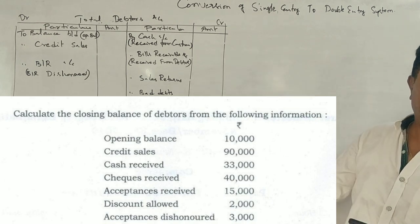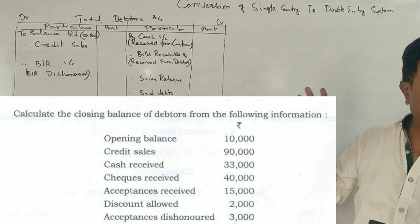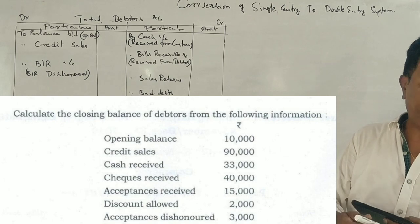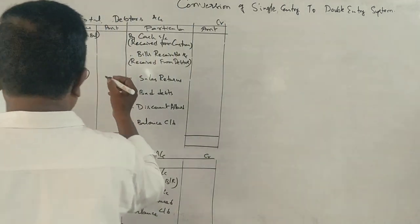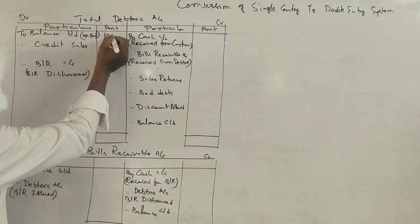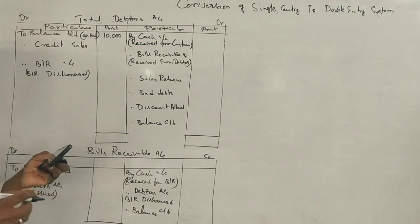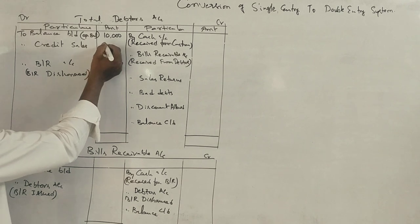Now, what is the case? The board is not here. Dash. Here, the opening balance is $10,000. Credit sales, what do you think?